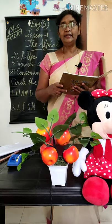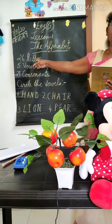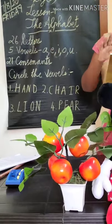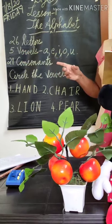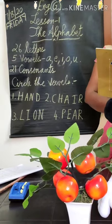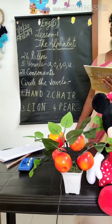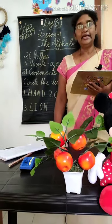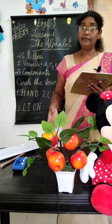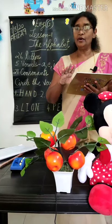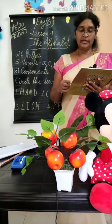How many letters are there in the English alphabet? There are 26 letters. How many vowels are there? There are 5 vowels: A, E, I, O, U. How many consonants are there? There are 21 consonants. The remaining 21 letters are called consonants.